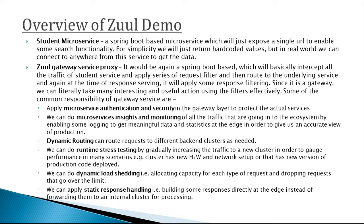These are some of the common responsibilities of a gateway service. One: apply microservice authentication and security in the gateway layer to protect the actual services. Two: do microservices insights and monitoring of all traffic going into the ecosystem by enabling logging to get meaningful data and statistics at the edge. Three: dynamic routing — route requests to different backend clusters as needed. Four: runtime stress testing by gradually increasing traffic to a new cluster. Five: dynamic load shedding — allocating capacity for each type of request and dropping requests that go over the limit. Six: static response handling — building some responses directly at the edge instead of forwarding them to an internal cluster for processing.